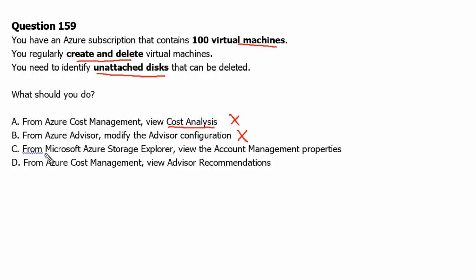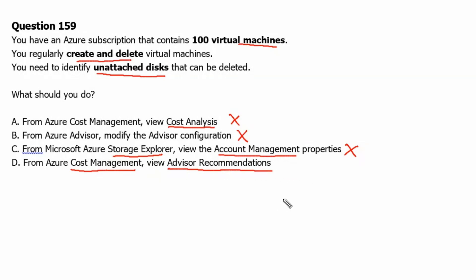Option C, viewing the account management properties from Microsoft Azure Storage Explorer, is also not helpful. Azure Storage Explorer is a standalone utility to explore and manage storage resources — it won't help figure out which resources are underutilized or not utilized. Option D, viewing Advisor recommendations from Azure Cost Management, is the correct answer. Advisor recommendations identify idle and underutilized resources and provide actionable recommendations. Therefore, option D is the correct answer.